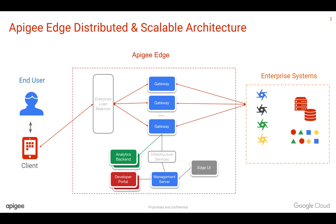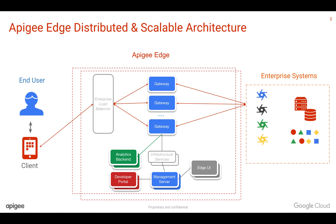If you see more load on your developer portal — where APIs are consumed, documentation is viewed, and developers are onboarded — you can run multiple machines with the developer portal in active-active mode. Similarly, if more people are building APIs, you can have Edge UI and the management server installed on multiple machines in active-active mode. Infrastructure services like Cassandra, ZooKeeper, and OpenLDAP can also be replicated in a redundant fashion so there is no single point of failure in the entire Apigee Edge platform. You can scale these components individually based on need. The entire Apigee Edge platform can be replicated across two different data centers in active-active mode to handle load from different geographical locations and satisfy disaster recovery needs.